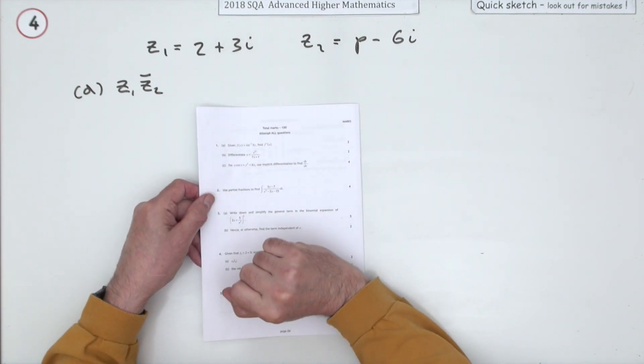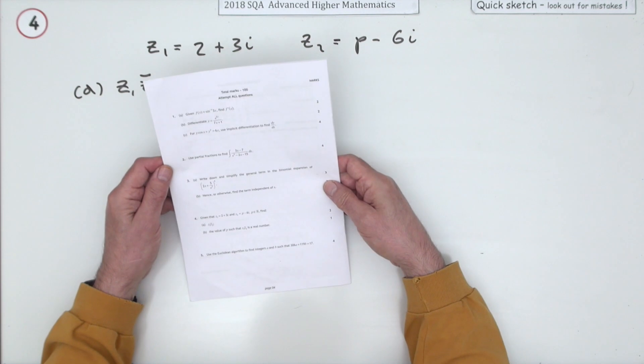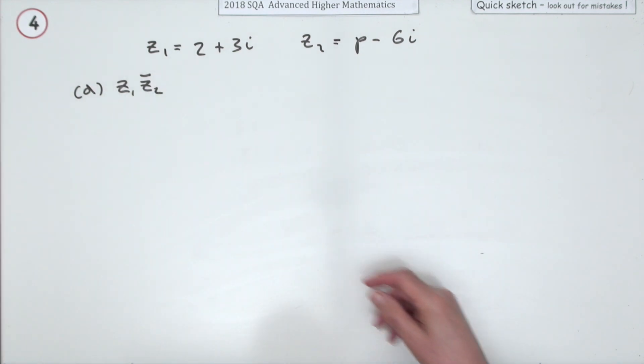Number four from the 2018 Advanced Higher Maths, a three mark question on complex numbers. Part A, for two of the marks, what's the value of that product?